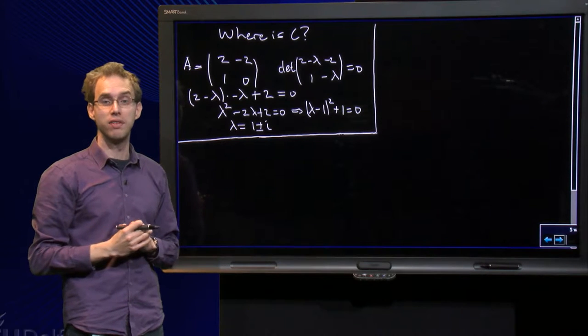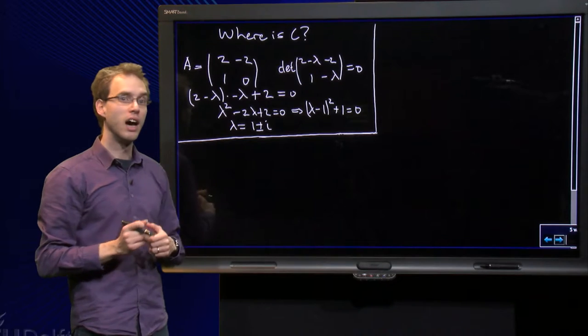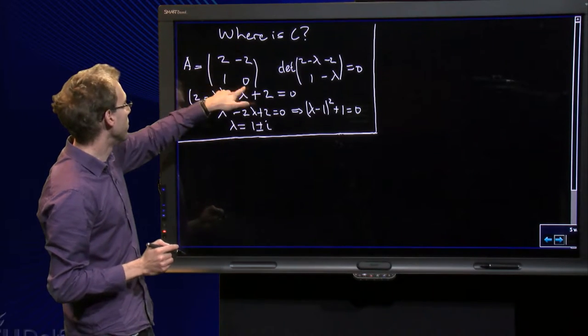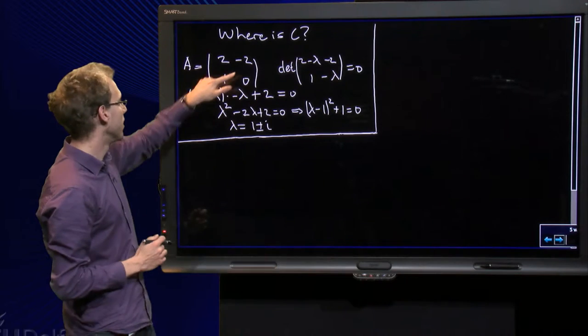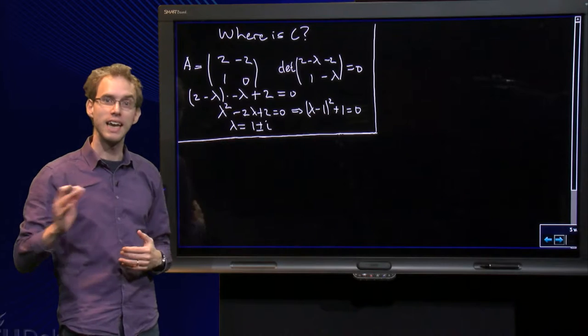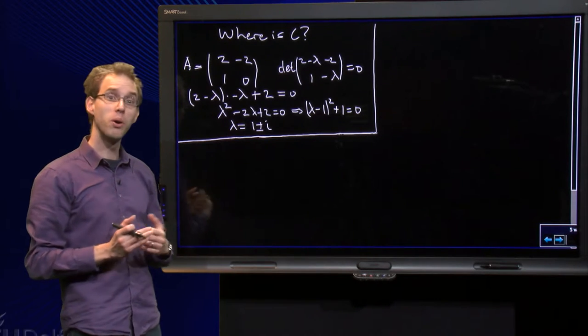In fact, we have here a matrix A with complex eigenvalues. However, the matrix A is certainly not a C-matrix, because the elements of the diagonal are not the same, and over here the off-diagonal is also wrong. So the matrix A is definitely not a C-matrix, so where is C?